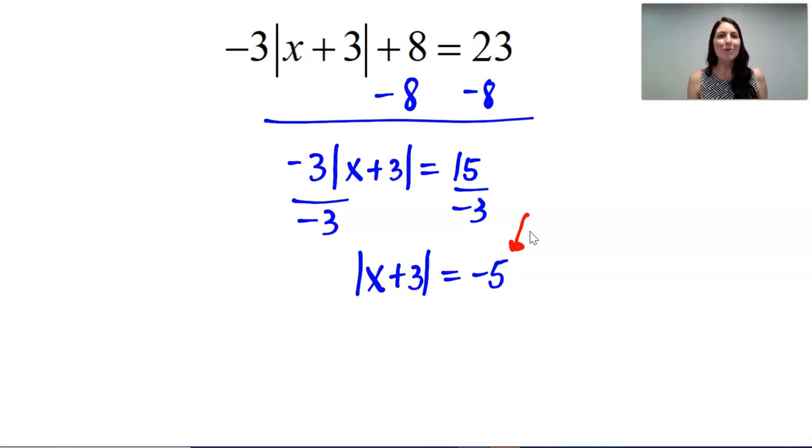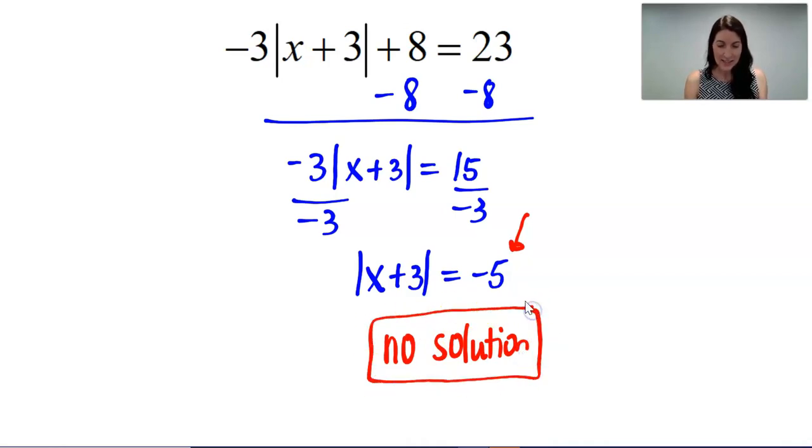Just a reminder, an absolute value can never end up being negative because it's always the distance away from 0 or how far away from 0. And like we said in the first slide, it can never be negative. So whenever this happens, we have no solution. There is no number that I could plug in for x and add 3, take the absolute value, multiply by negative 3, add 8 and ever get 23. And once again, that's because we got an absolute value was equal to a negative number.